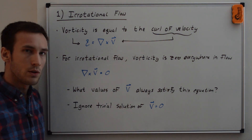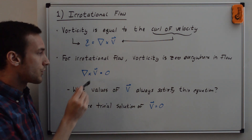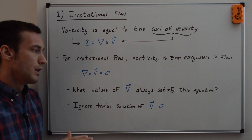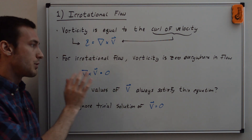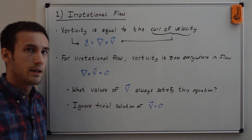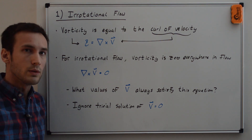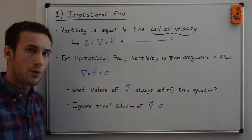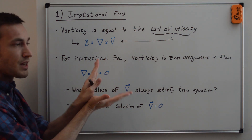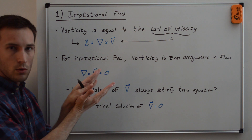The question is: what values of velocity always satisfy this equation? We'll ignore the trivial solution of velocity equaling zero, since that doesn't give us anything interesting. Physically, in an irrotational flow, the fluid elements can only translate in space. Note that you can also have angular velocities of the sides of a fluid element, but they have to be equal and opposite.